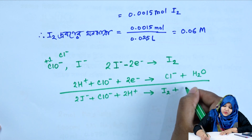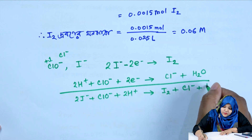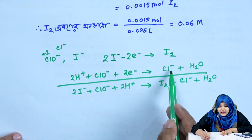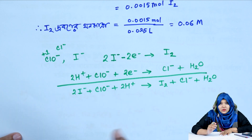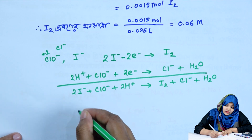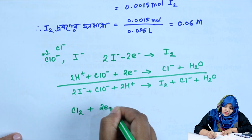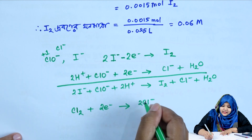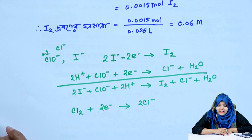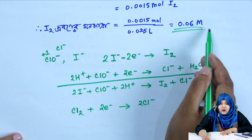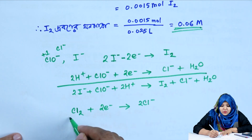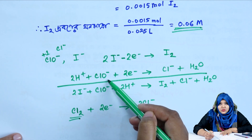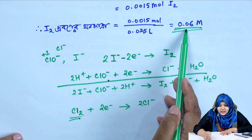1 mol iodide with 1 mol chloride ion and 1 mol water undergoes a reaction. The chloride ion here gains two electrons, making this reaction equivalent to one chlorine reaction. From here, two pieces of iodine are formed.